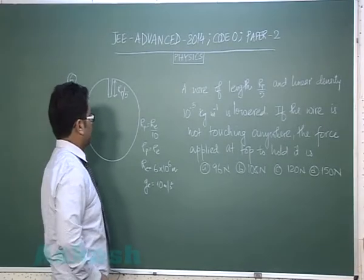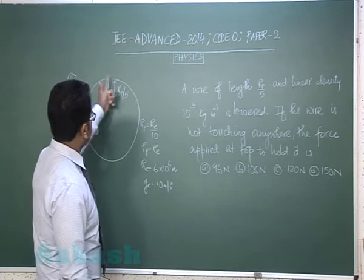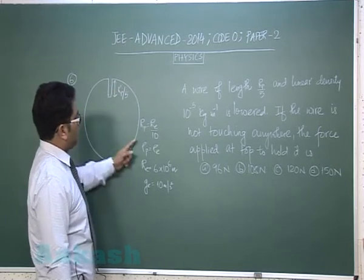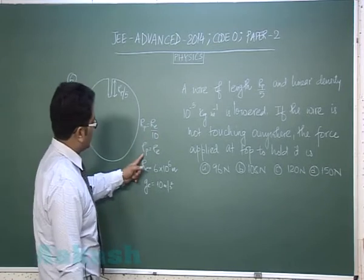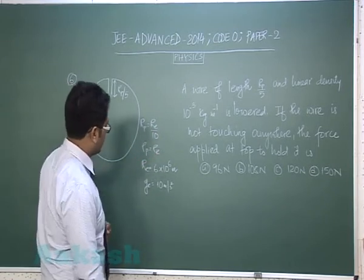Okay, let's go to question number six. There is an imaginary planet whose radius is one-tenth the radius of earth and the density of the planet is equal to density of earth.